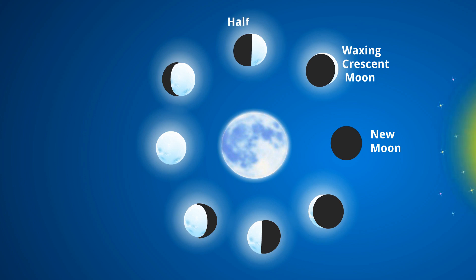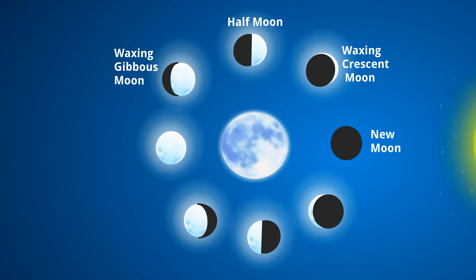Half moon is when half of the lit portion of the moon is visible after the waxing crescent phase. A waxing gibbous moon occurs when more than half of the lit portion of the moon is visible.